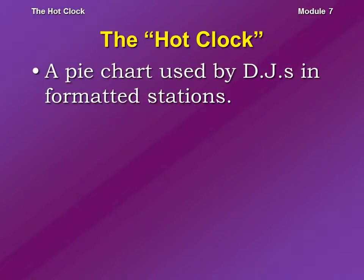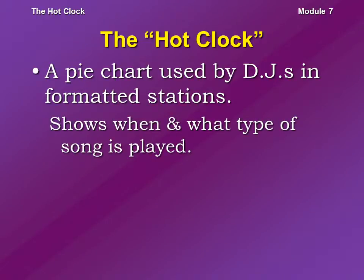Welcome to Module 7 about the hot clock, which is a pie chart used by DJs or announcers in formatted stations to help keep them on track. It shows things like what song is supposed to be played at what time. Even though computer programs have made it easier to compress all this into a playlist, it's still a good idea to have a hot clock within eye shot of the person running the show, because it gives them an idea of how the hour is going to unfold.